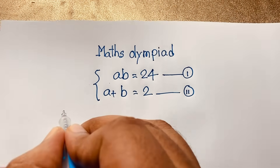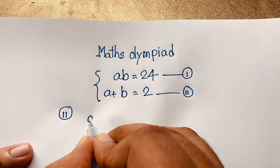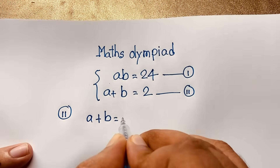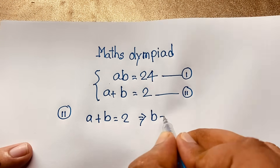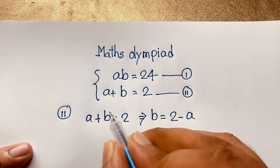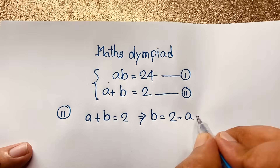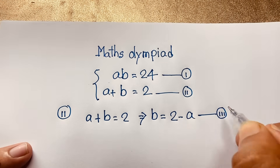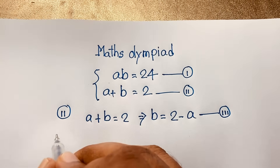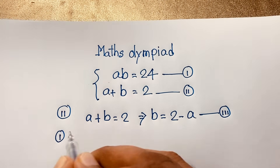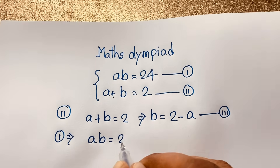Now if I take our second equation, our math solution starts here: a plus b is equal to 2. Then you can see b is equal to 2 minus a — I just move this a to the other side, it will be negative a. This is our third equation. Now at this moment I take our first equation: ab is equal to 24.